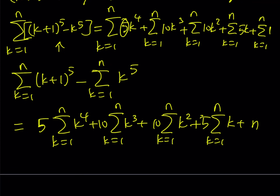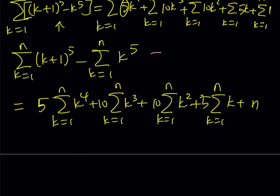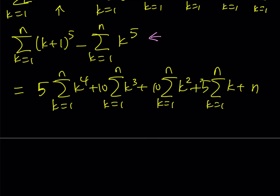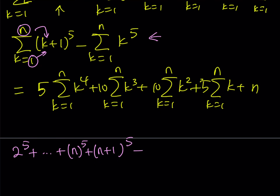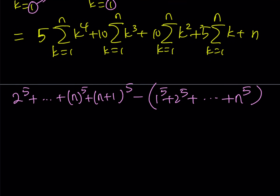The left-hand side can be simplified. Expanding the telescoping sum starting at k=1 gives 2 to the 5th, continuing up to n, and when k=n we get (n+1)^5. The terms from 2^5 through n^5 cancel out, and the left-hand side simplifies to (n+1)^5 minus 1.